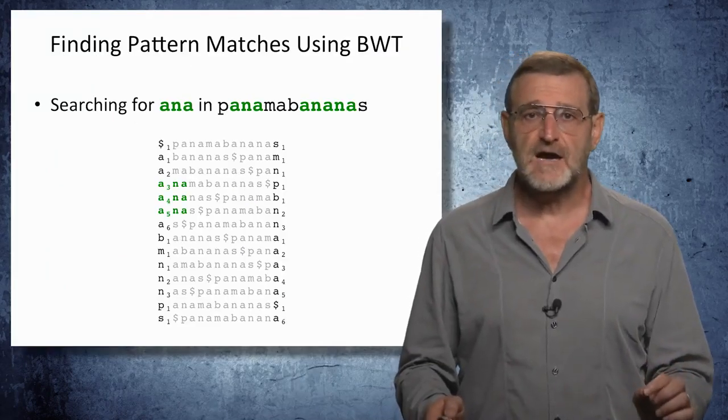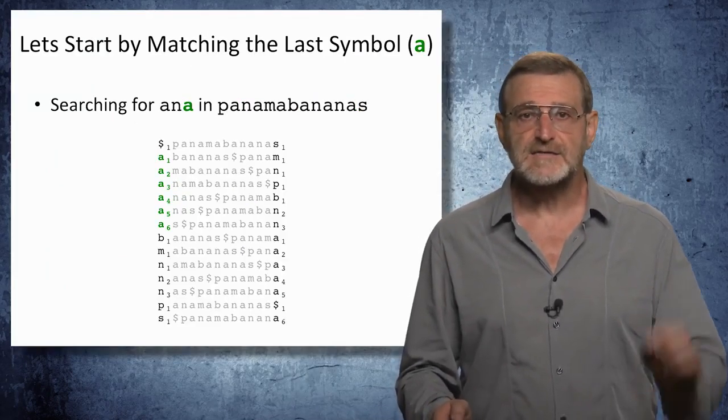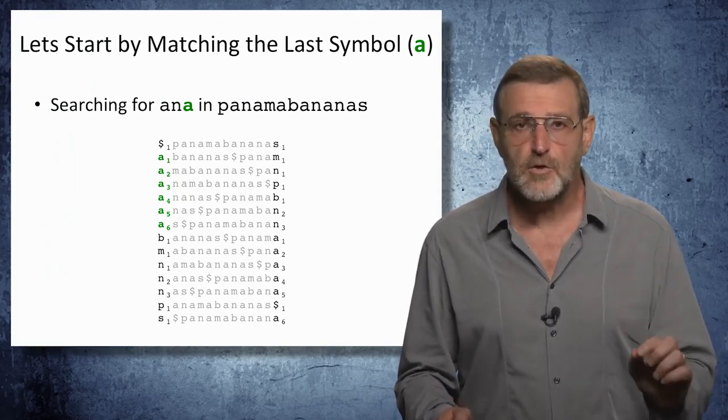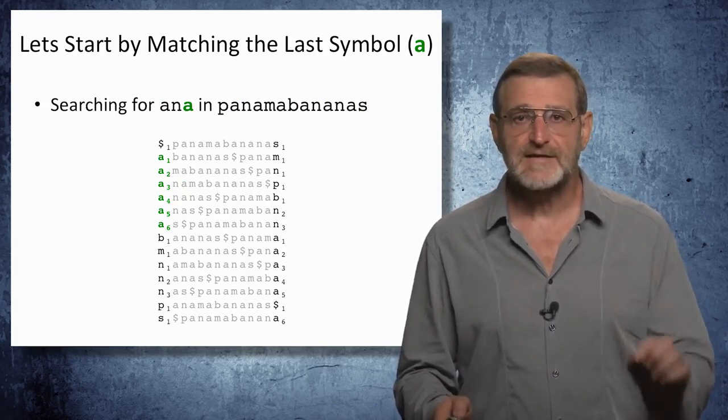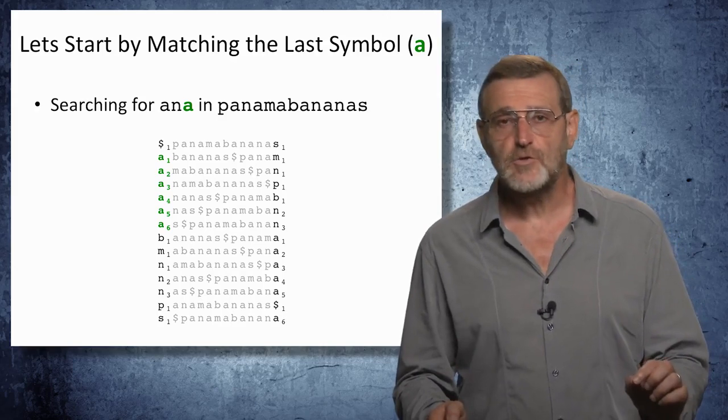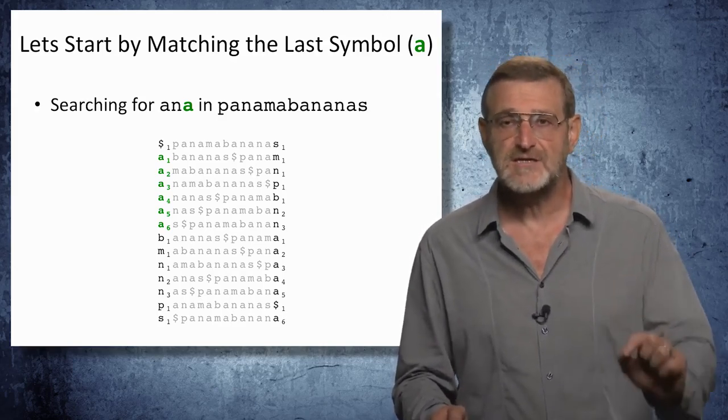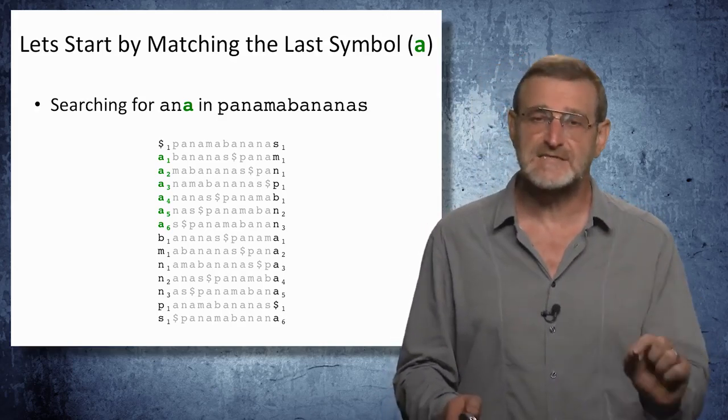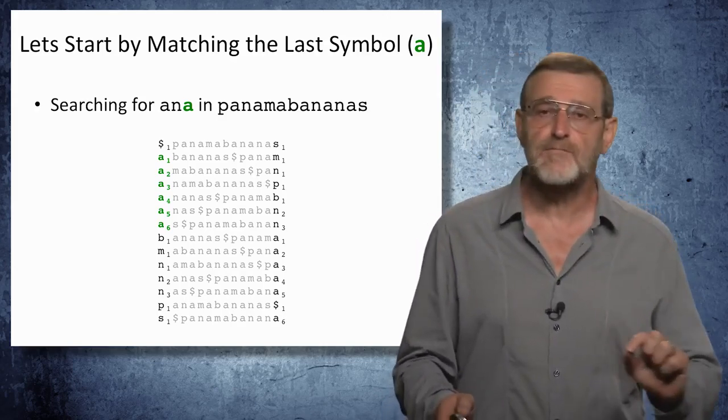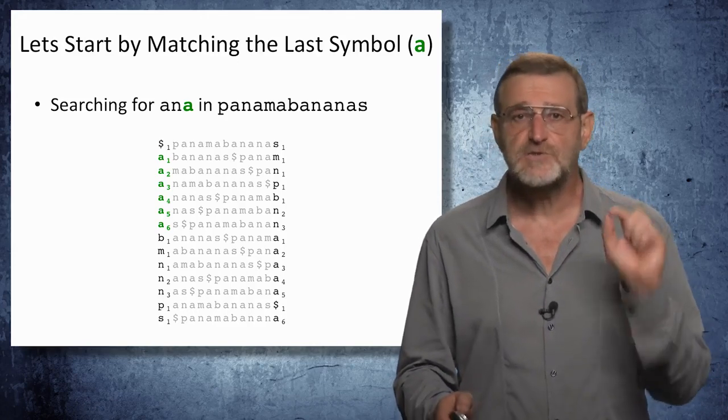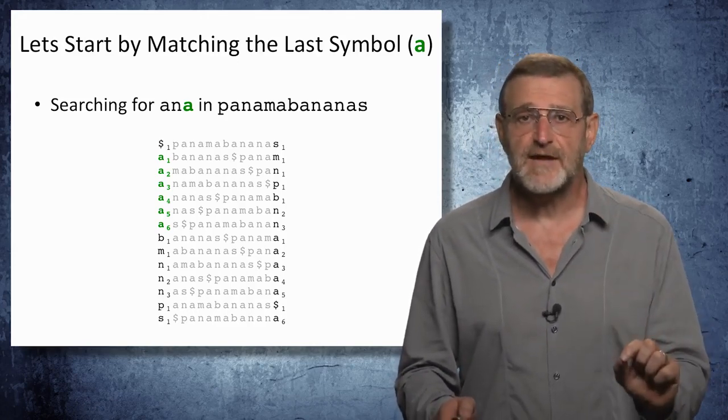We definitely start by noticing that there are six rows that start from letter A. But when we look, please notice also that we are currently matching the last symbol in 'ana', rather than the first one - this will be important. So there are six rows starting from A.